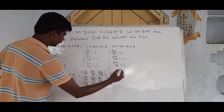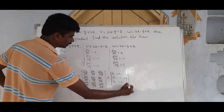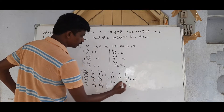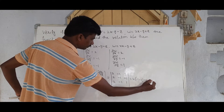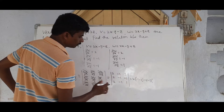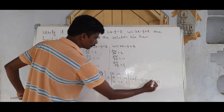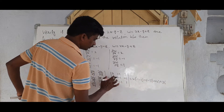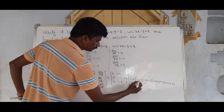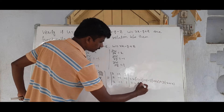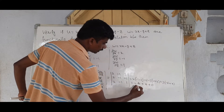Expanding the determinant: 2[(−1)(1) − (−1)(−1)] − (−1)[(2)(1) − (−1)(2)] + 3[(2)(−1) − (−1)(2)]. This gives 2(−1−1) + 1(2+2) + 3(−2+2) = 2(−2) + 1(4) + 3(0) = −4 + 4 + 0 = 0.